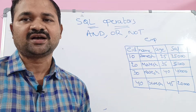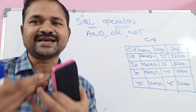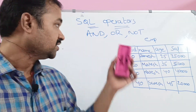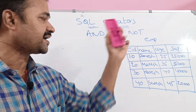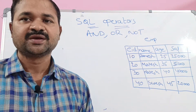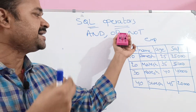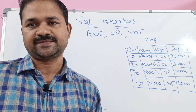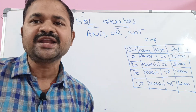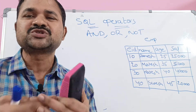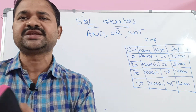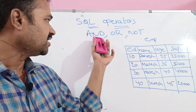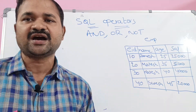We know the syntax: SELECT, FROM, WHERE. In the WHERE clause we use AND, OR, and NOT. Generally, we use AND and OR when there are more than one condition — that means two conditions or three conditions.